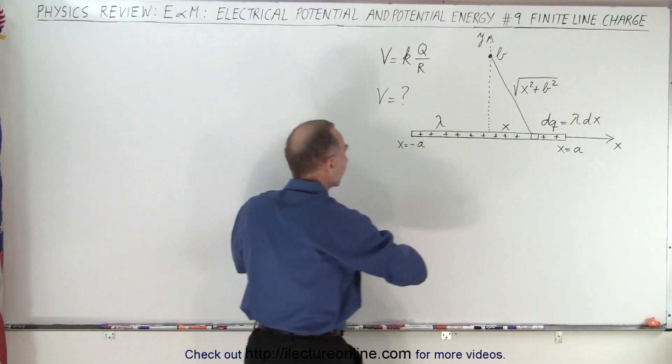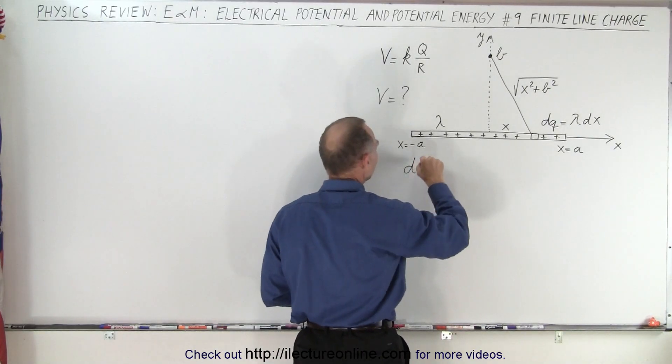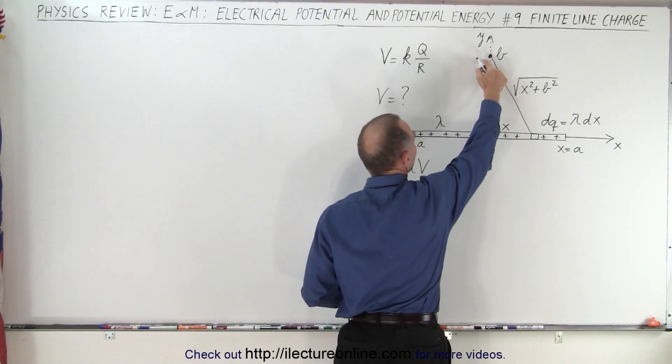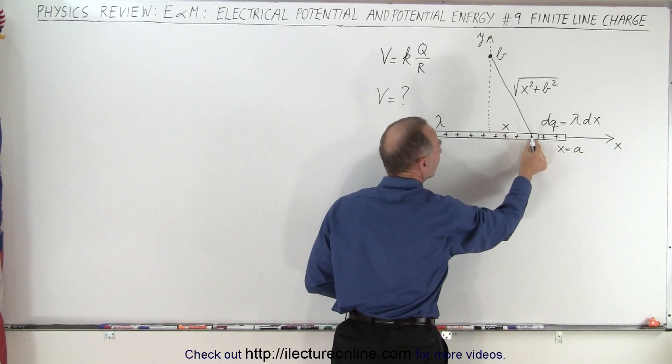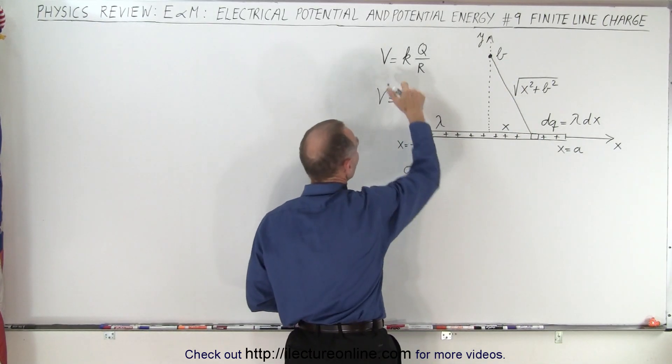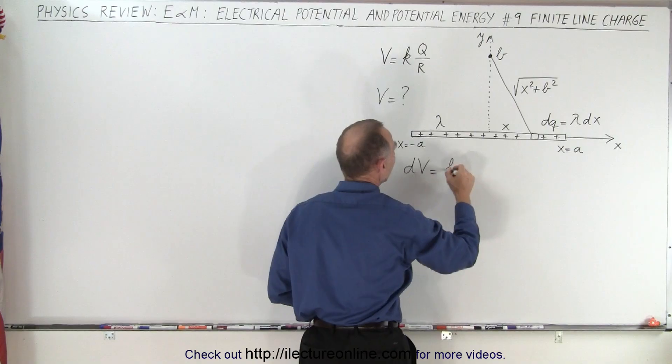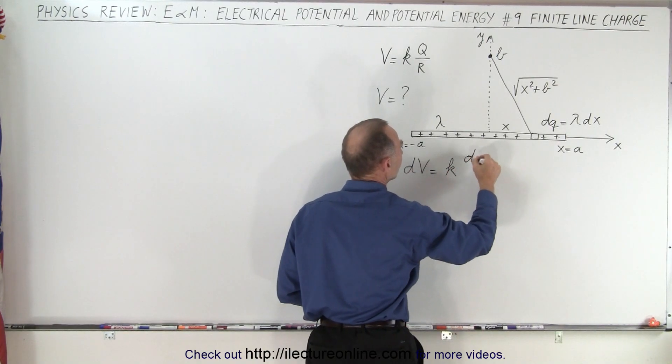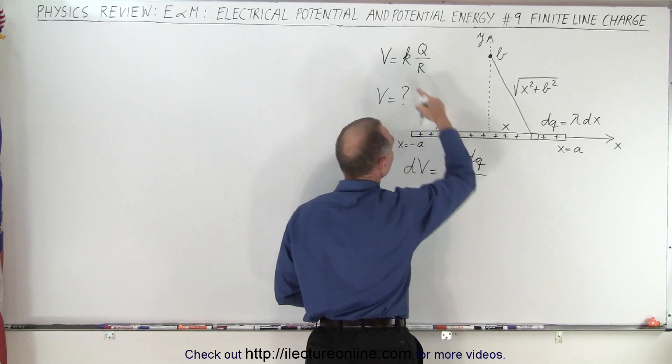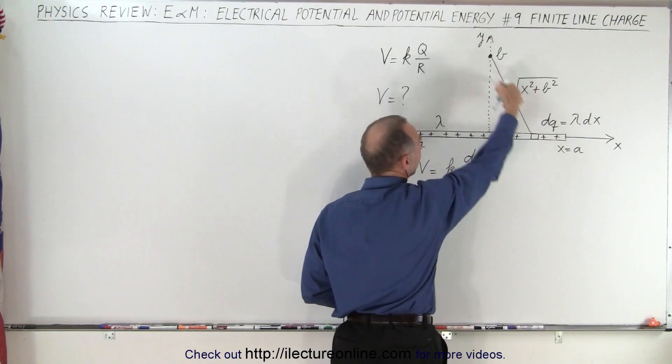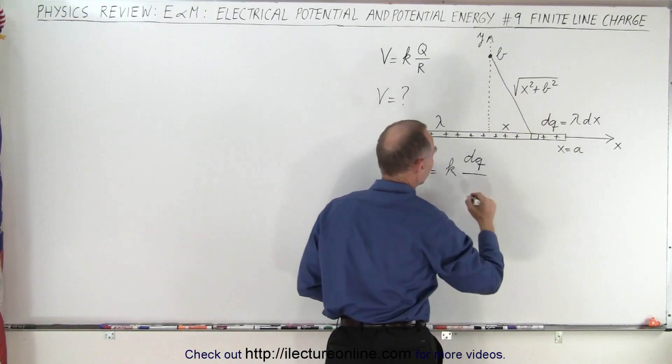So what we're going to do is we're going to say that there's a small amount of voltage dV at this location right here due to the small amount of dq there. So we set up the same equation, so this will be equal to k times the charge which is a small little dq divided by the distance r, which is in this case the square root of x squared plus b squared.